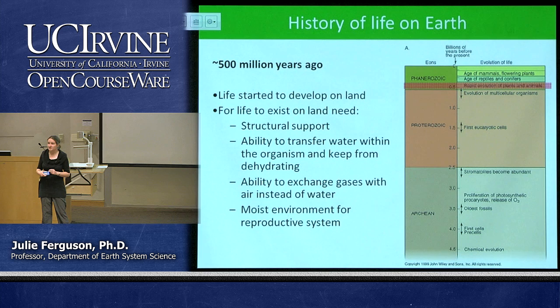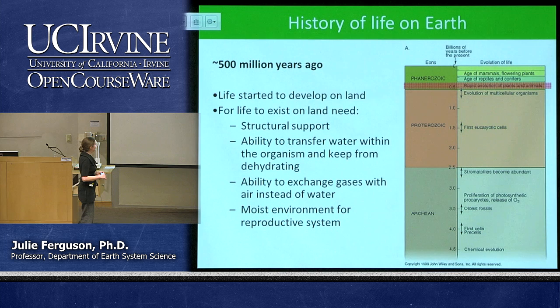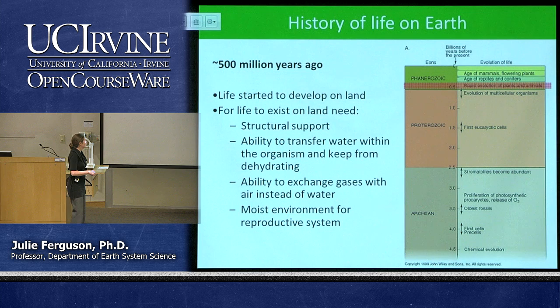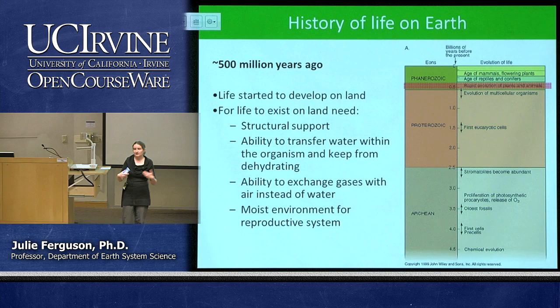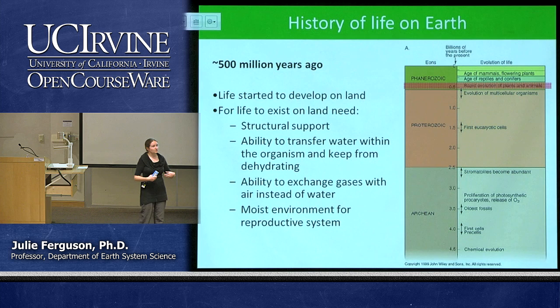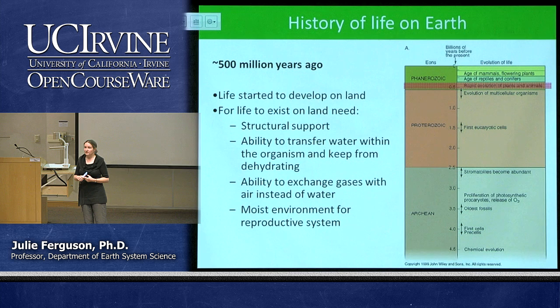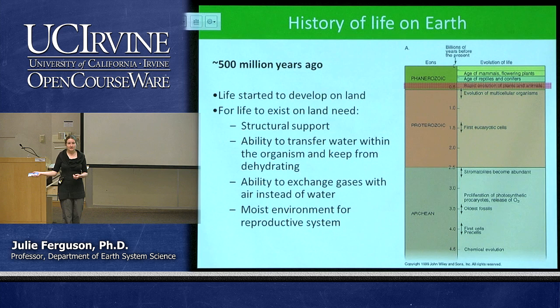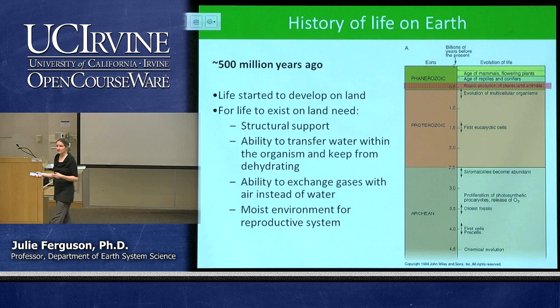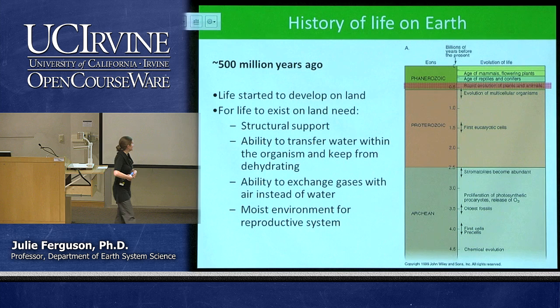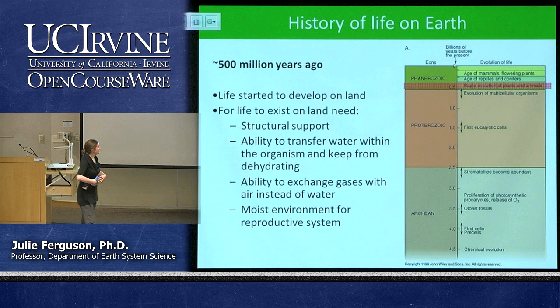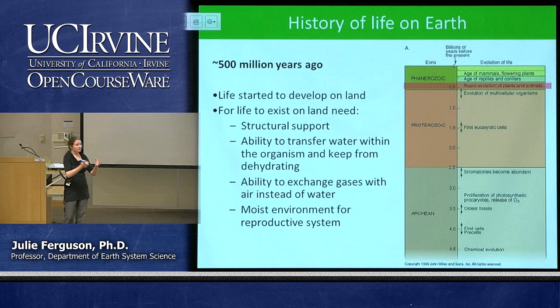You also need to be able to take in gases — if you're adapted to removing oxygen from seawater, you need to adapt to taking it from the atmosphere instead. And you need a moist environment for reproduction. Different organisms solved this differently: mammals have internal reproduction, growing babies inside; birds and reptiles have eggs which keep embryos moist. There are a number of significant challenges that life had to face when moving from the ocean onto land.